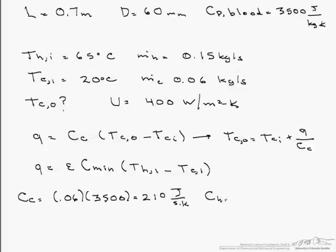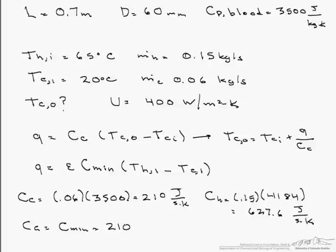Our C_H is 0.15, the mass flow rate of the hot fluid, times the heat capacity of water. So our C_H equals 627.6 joules per second K. That means our C_min is our C_C, which is 210 joules per second K.